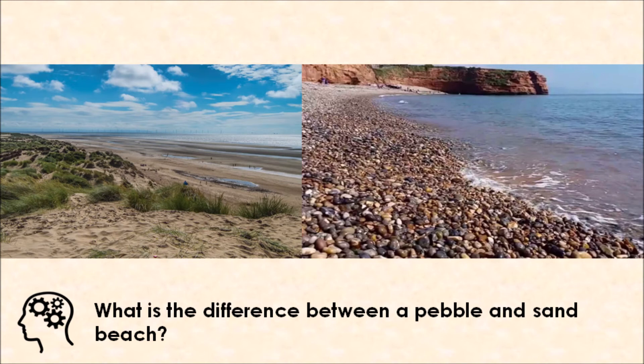Let's think about the differences between different types of beaches. A beach is a landform of coastal deposition lying between the high and low tide levels. Today I'm going to go through two types: a sand beach and a pebble beach — starting with the pebble beach.